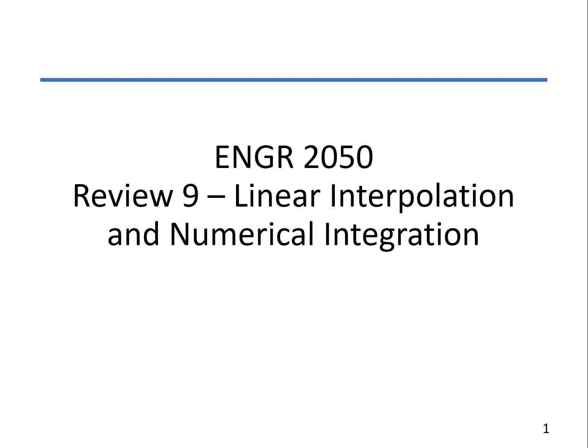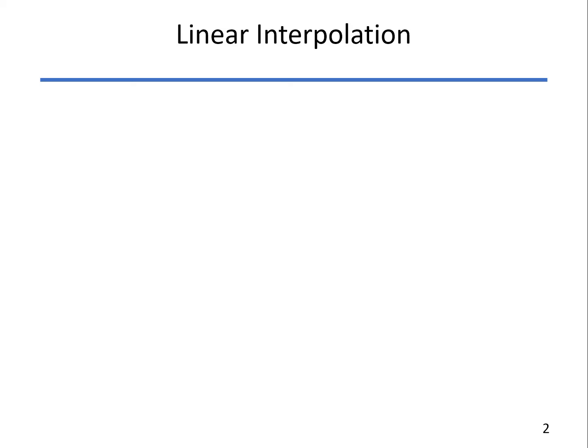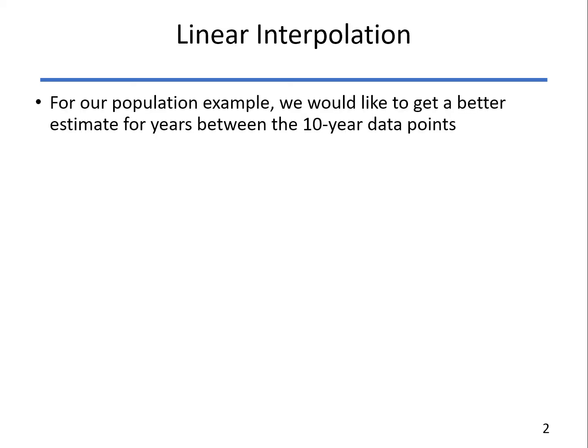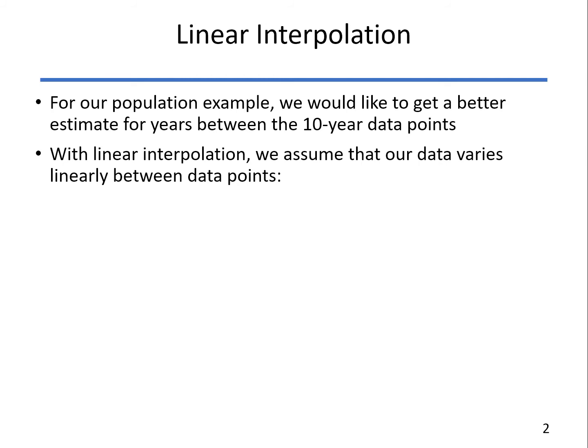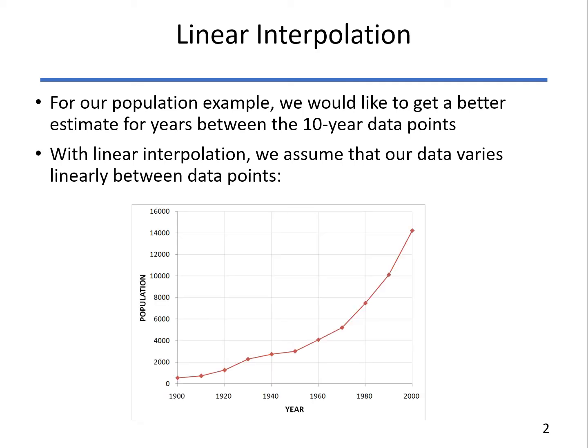So looking at linear interpolation first, when we looked at lookup tables, we looked at the population of a given town on 10-year intervals. And so what we'd really like to do is get a better estimate of what happened between those 10 years. So with linear interpolation, we make the assumption that the data varies linearly between the data points.